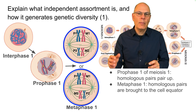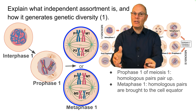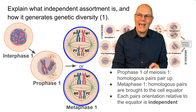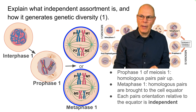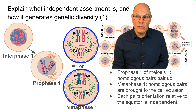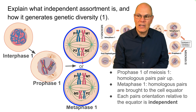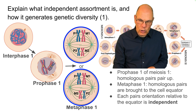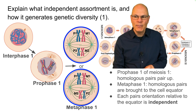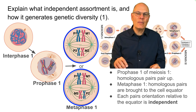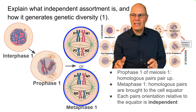During metaphase 1, the pairs are pulled by spindle fibers to the cell equator, just as happens in mitosis. But the way each pair gets dragged to the middle is independent of every other pair. In this simplified system, it's possible that the paternal chromosomes might be on the left side and the maternal ones on the right side. It's equally possible to have paternal chromosome 1 on the left with maternal chromosome 2 also on the left. It's as random as flipping a coin, and that randomness is essential.